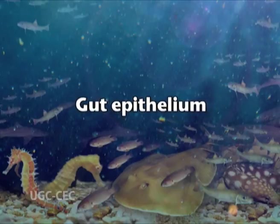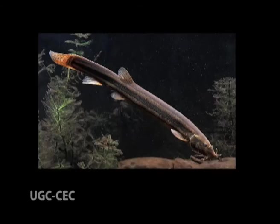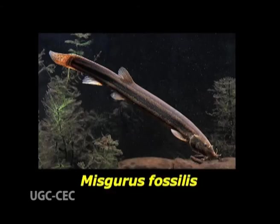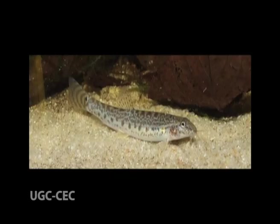Gut epithelium: in several fishes, the epithelium of certain parts of the alimentary canal becomes modified to serve as a respiratory organ. It may be the stomach in the case of Misgurnus fossilis, the intestine in Lepidocephalus, or the rectum in Callichthys. Fresh air is drawn through the mouth or anus and, after gaseous exchange, removed through the anus.